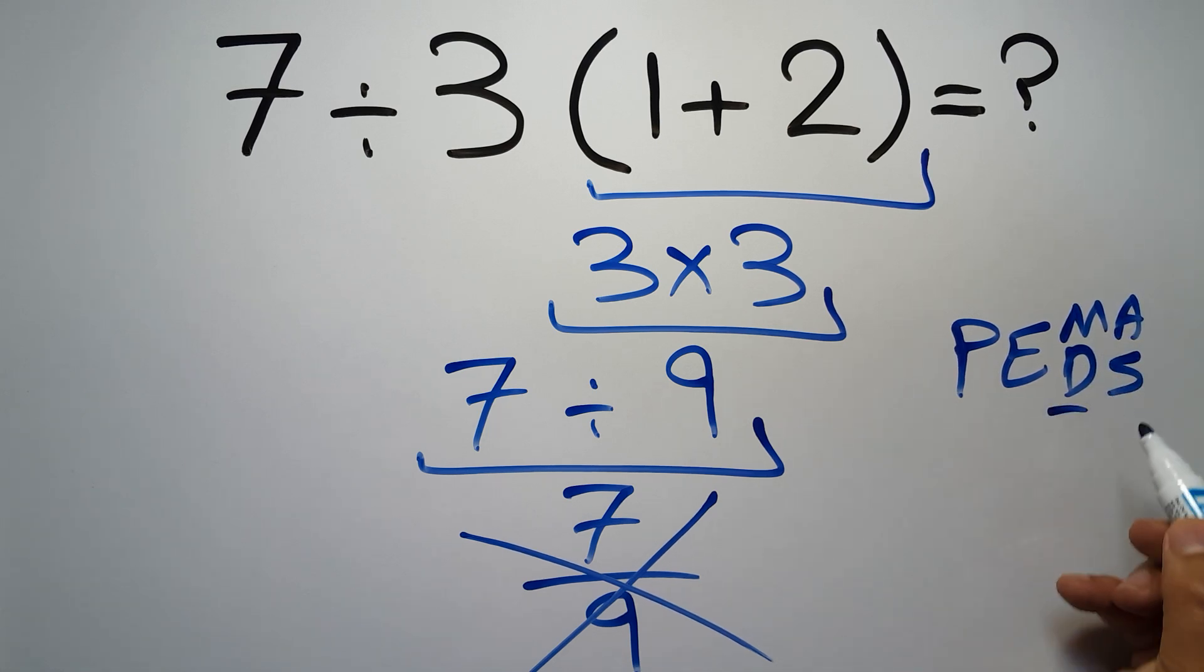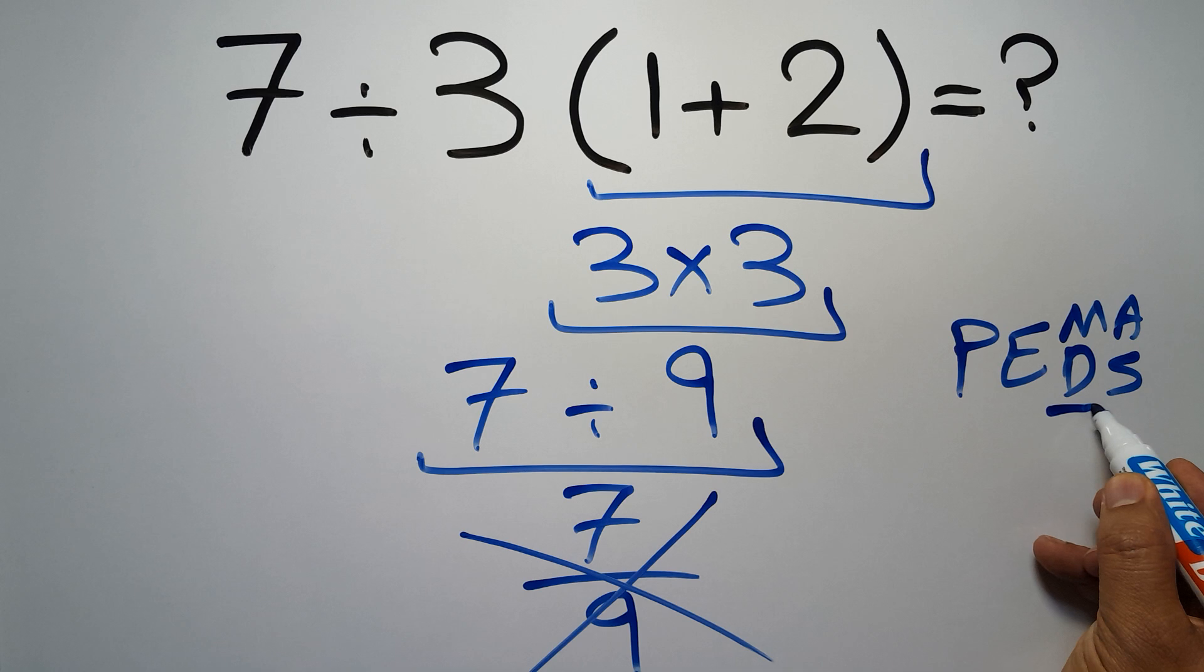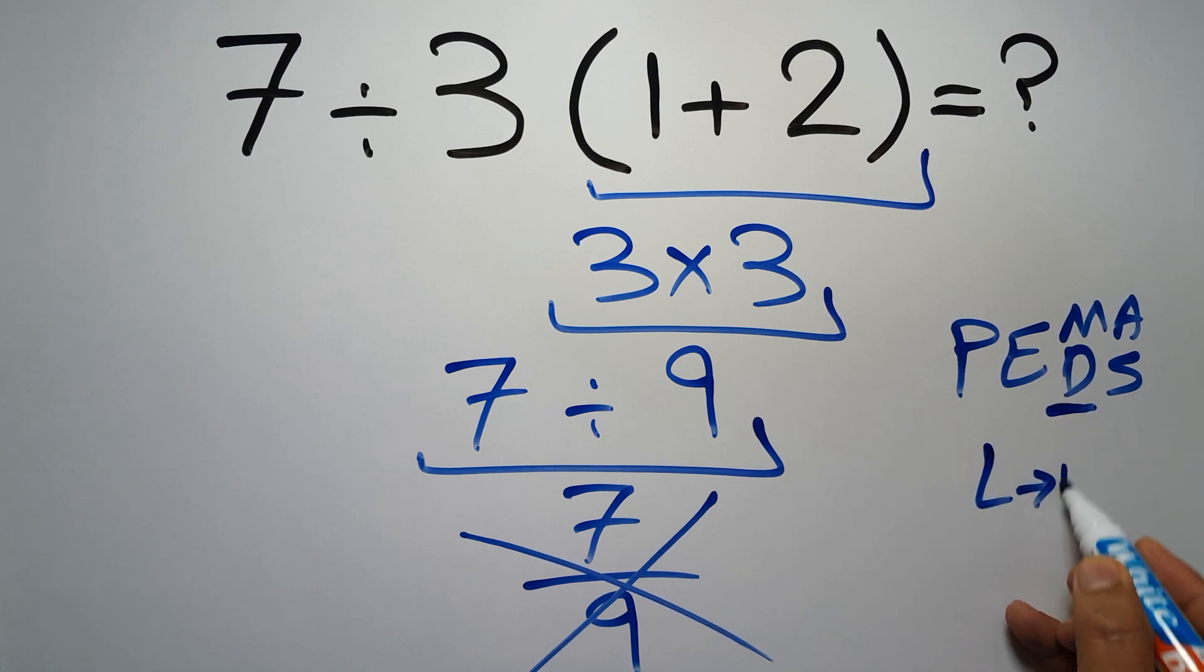Remember that multiplication and division have equal priority, and we have to work from left to right, and the same applies to addition and subtraction.